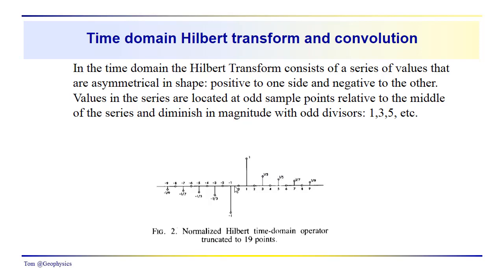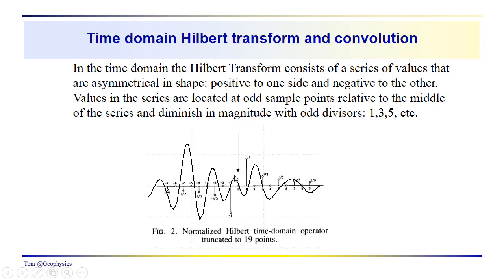In the negative direction we have just the negative reciprocals of the odd numbers: minus one, minus one-third, minus one-fifth, and so on, with the even numbered samples all equal to zero. Now the output is at zero, and so when we're applying this operator to the real trace, we're getting a sum of the contributions of all these sample values from the real trace output at this particular point.